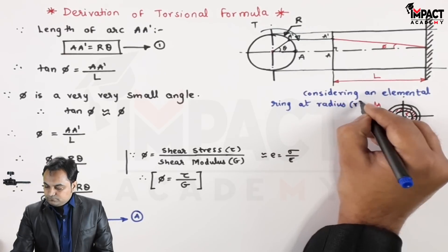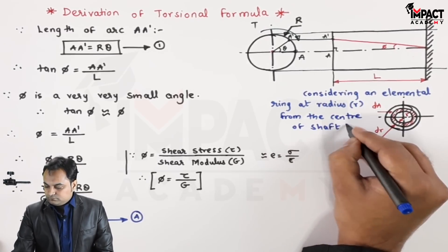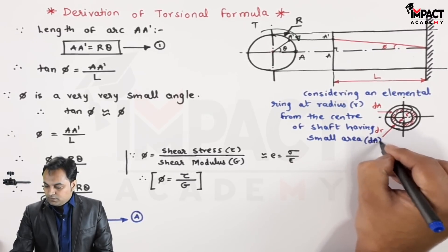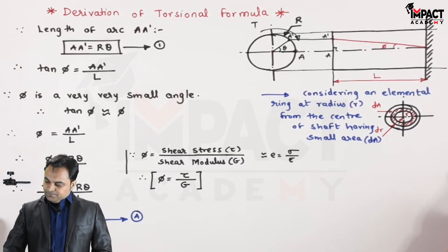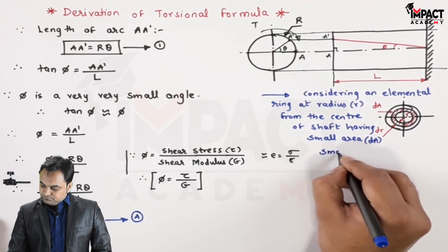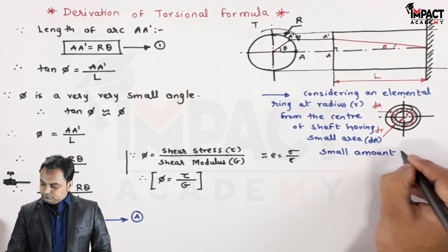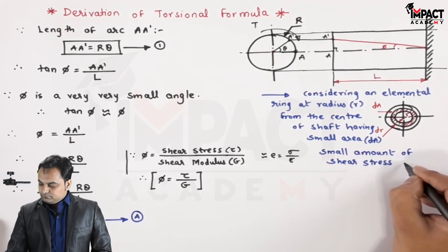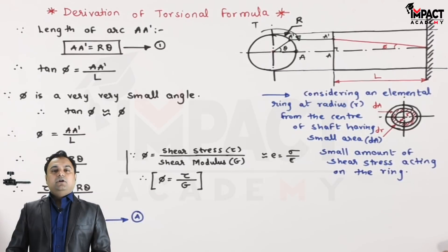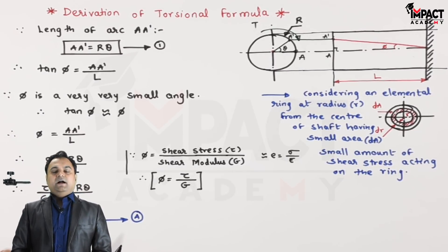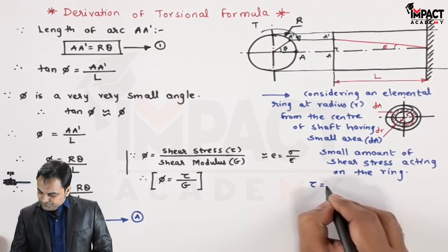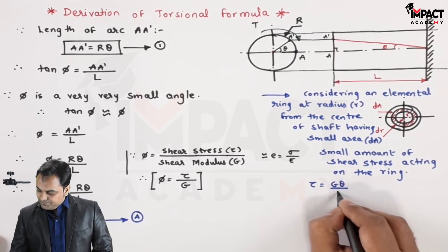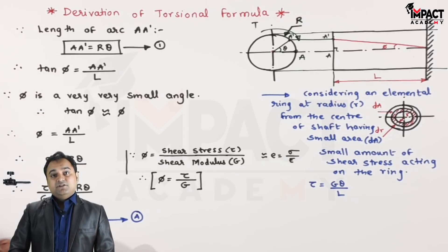I am considering an elemental ring at a radius of small r, having thickness dr and area dA. The small amount of shear stress acting on this ring is given by using Equation A — replacing capital R with small r — so tau = G·theta·r / L.